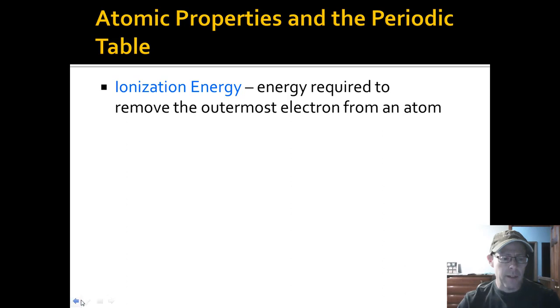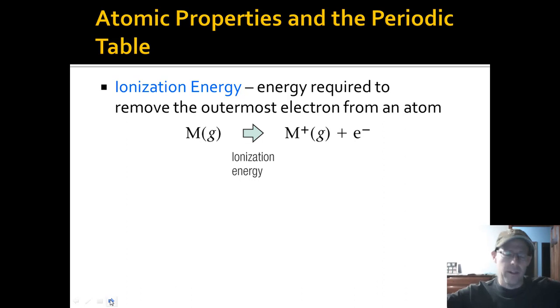We might have something that looks like this equation wise: M, just some metal, becomes M plus, plus an electron. So that's what ionization energy, how we might symbolize it in an equation. You don't need that for notes though.